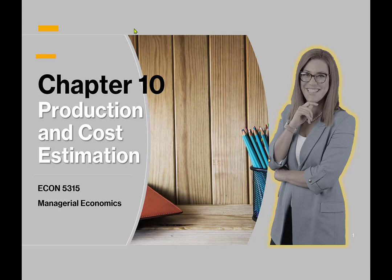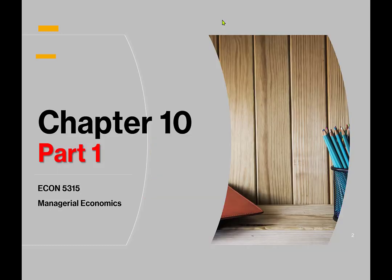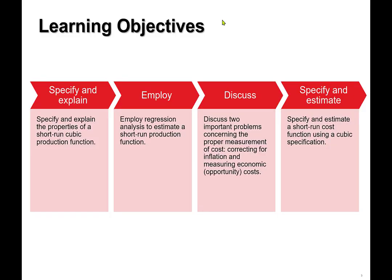Hello everyone, this is Chapter 10: Production and Cost Estimation. Managers use estimates of production and cost functions to make decisions on output pricing, hiring, and investment. In chapters 8 and 9 we learned basic theories of production and costs. In this chapter we will learn statistical techniques to estimate production and cost in the short run. In the short run, managers make pricing, hiring, production, and output decisions; in the long run it is more about investment in plant, factory size, and equipment.